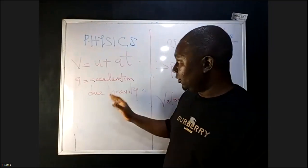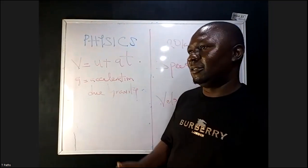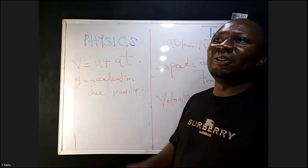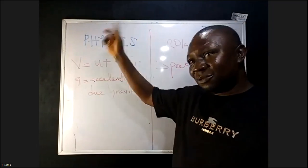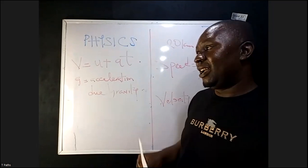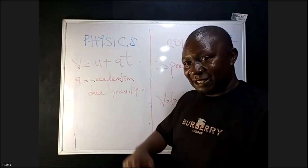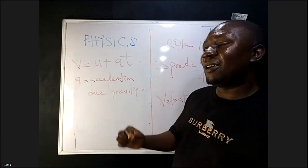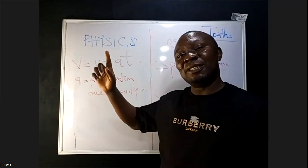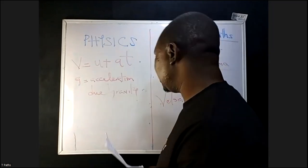The acceleration due to gravity is not always constant. The acceleration due to gravity on Earth is different from the one on the Moon. The one in Nigeria might likely be different from the one in the US. But A is a linear acceleration.